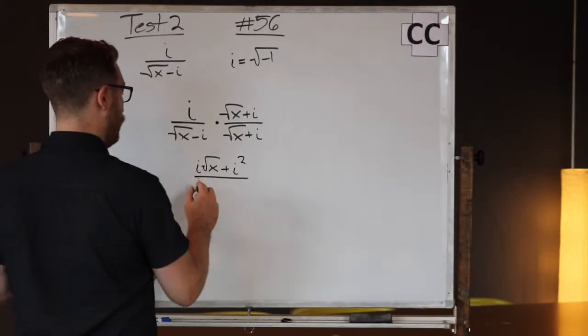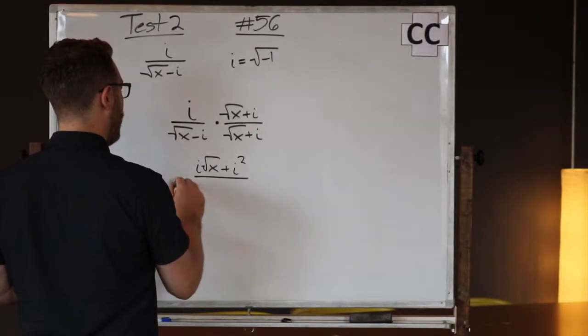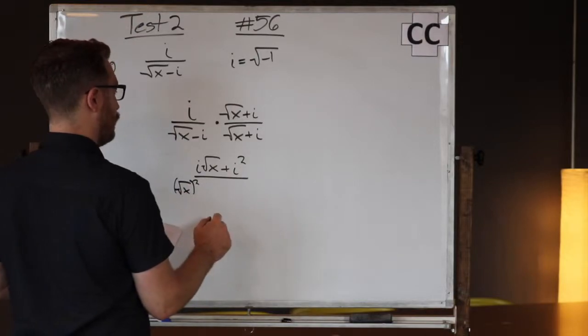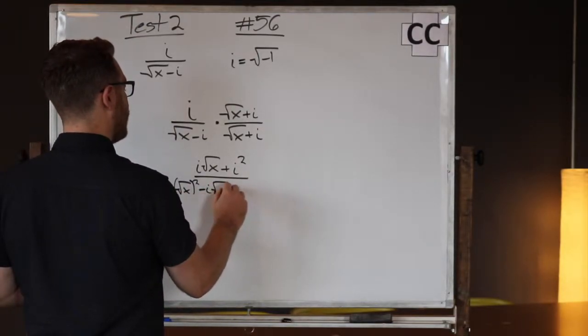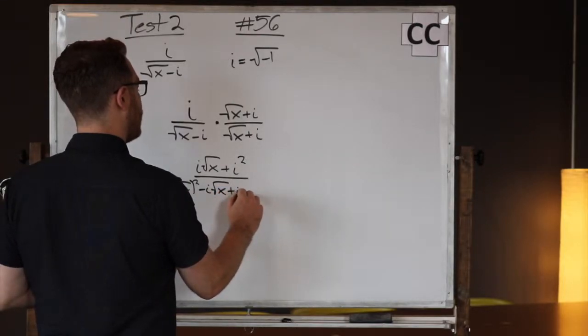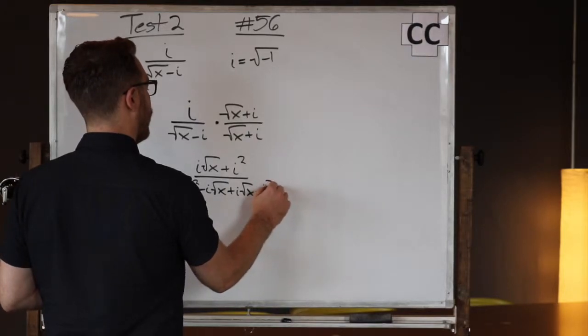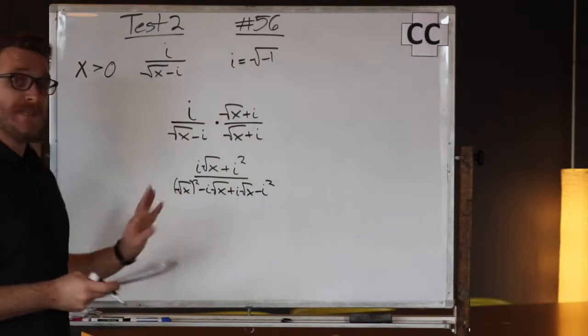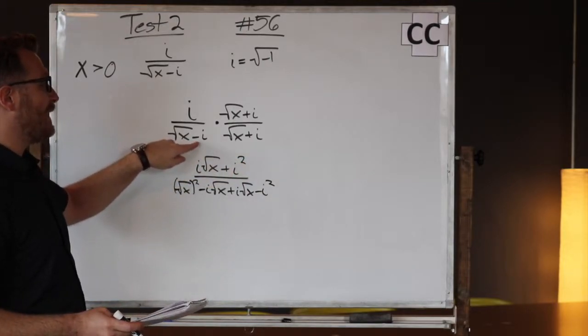Down below I'm going to have to FOIL these two, so I'm going to have √x² minus i√x plus i√x minus i². Now you see why I used this, because it's almost the same but as a plus instead of a minus.